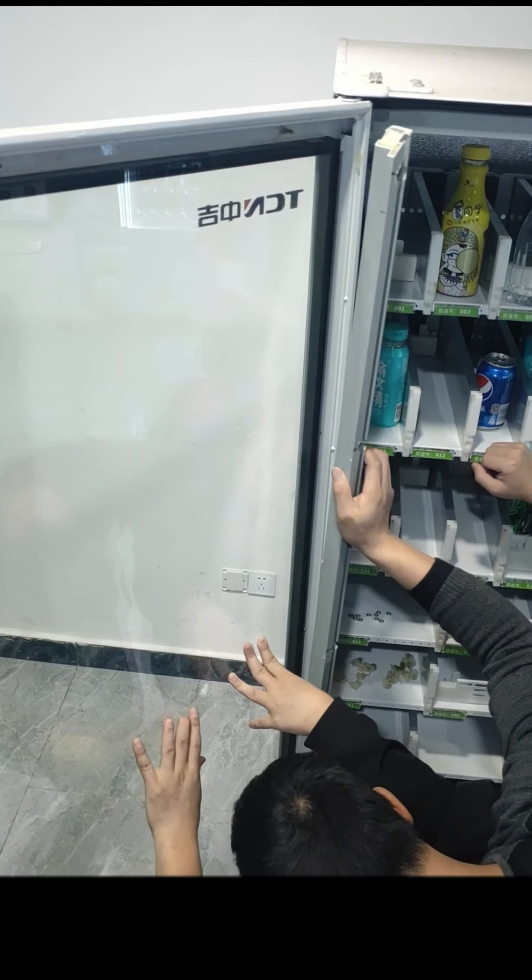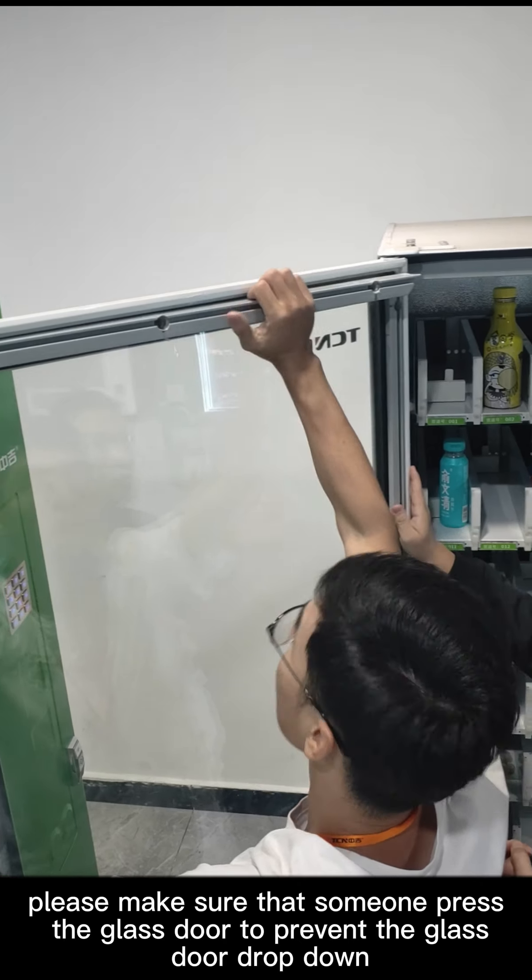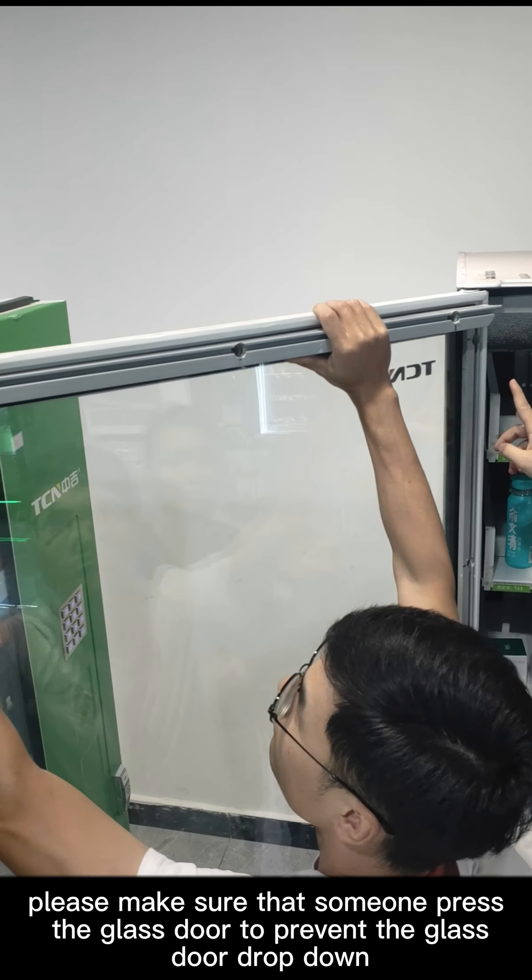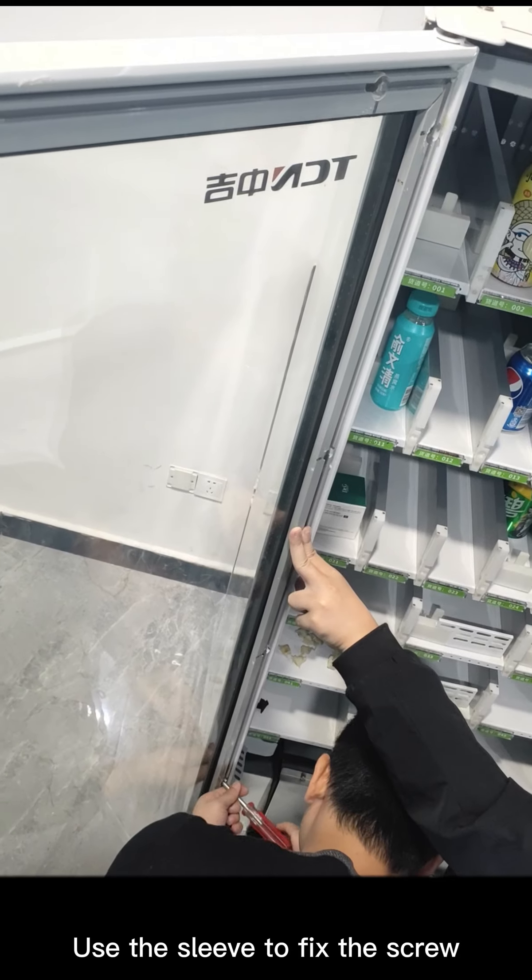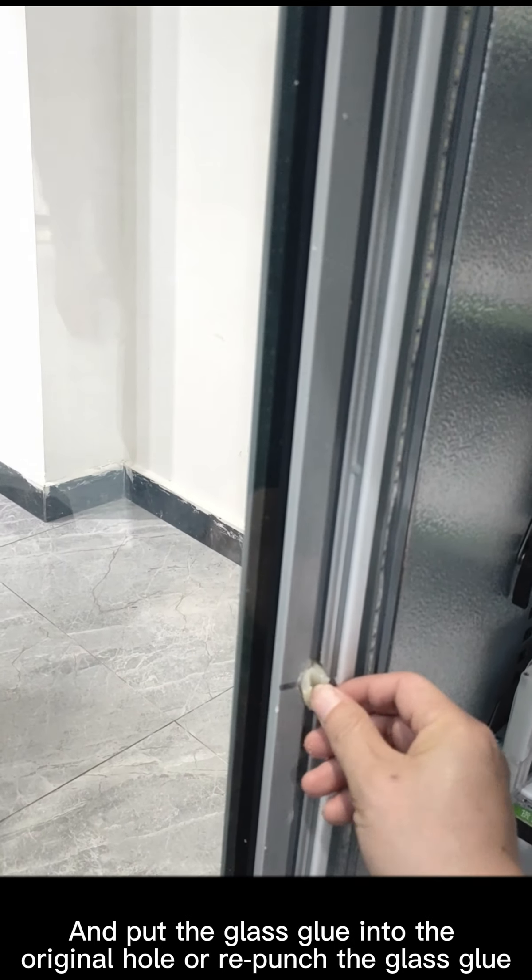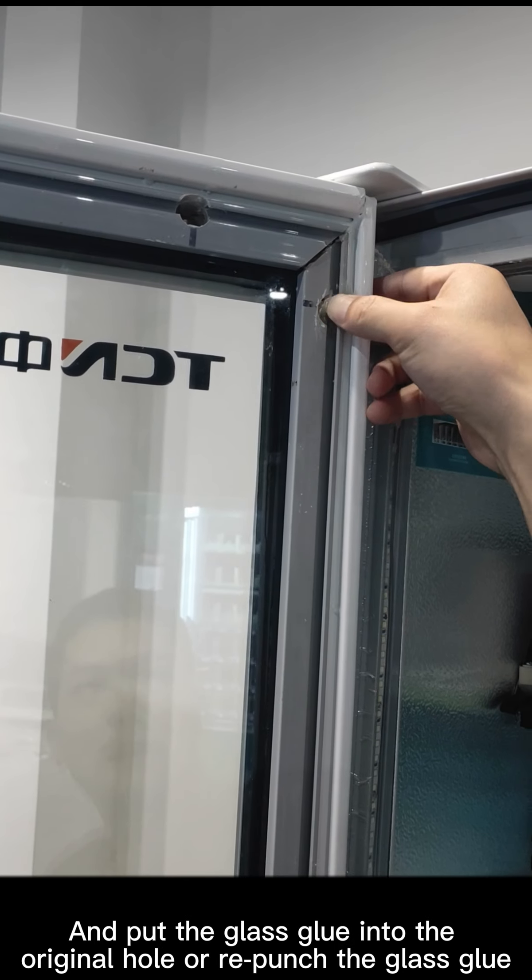Before the glass is completely fixed, please make sure that someone presses the glass door to avoid the glass door dropping down. After the frame is fixed, use the sleeve to fix the screw and put the glass glue into the original hole, or apply punch the glass glue.